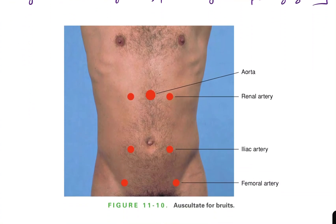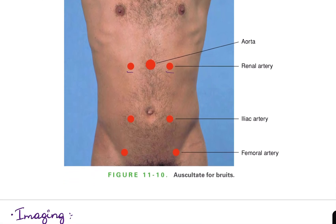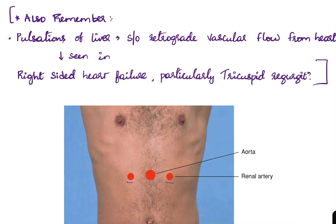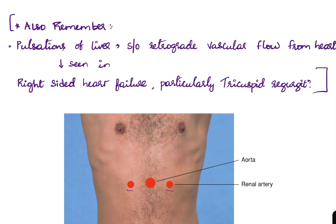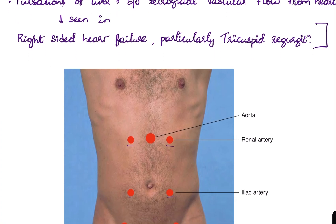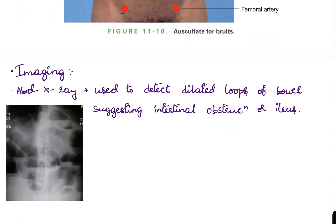Auscultation areas for bruits include the aorta in the center, and the renal arteries, iliac arteries, and femoral arteries. Also remember, pulsation of the liver suggests retrograde vascular flow from the heart, usually seen in right-sided heart failure — particularly tricuspid regurgitation.